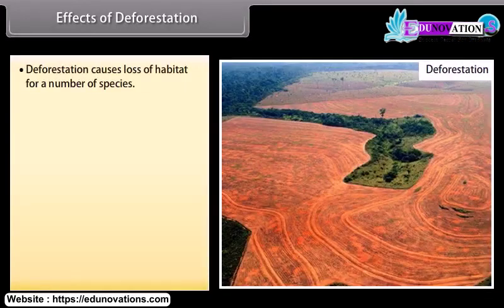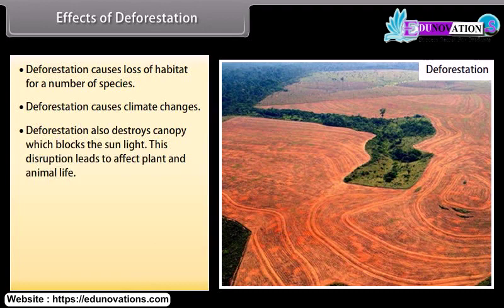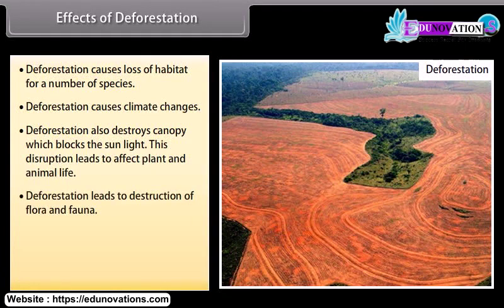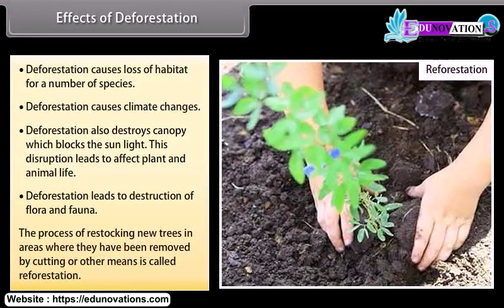Deforestation causes loss of habitat for many species and leads to climate changes. It also destroys the canopy which blocks sunlight, disrupting plant and animal life. Deforestation leads to destruction of flora and fauna. The process of restocking new trees in areas where they have been removed by cutting or other means is called reforestation.